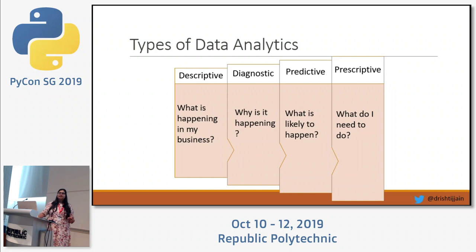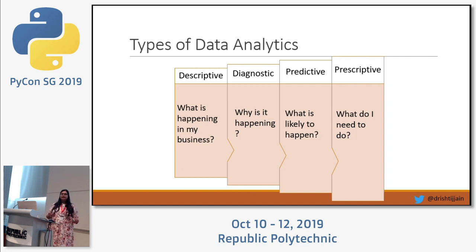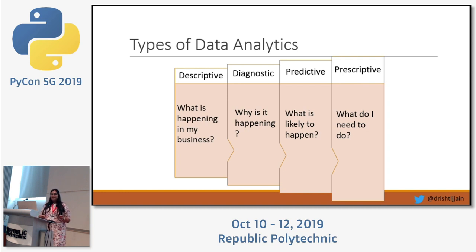Since we talked about data analytics, let me emphasize a bit more on that. There are four major types of data analytics. The first is descriptive — we analyze data to answer the question of what is happening in my business. The second is diagnostic — we try to find the reason why one particular product is working more than another. Why is it happening is the question we answer in diagnostic analytics. The third is predictive.